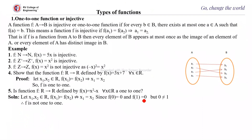We will continue with the types of functions. The first category is one-to-one function, also called injective function. A function f from A to B is injective or one-to-one if for every b belonging to B, there exists at most one a belonging to A such that f(a) equals b. This is very important — every element has a different or distinct image.